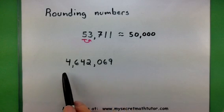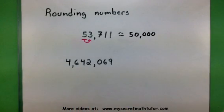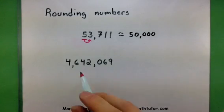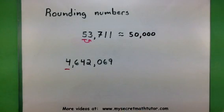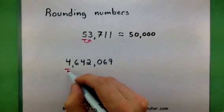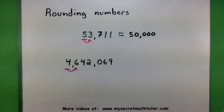Here I have the number 4,642,069. I want to round this one to the millions spot. It would be this 4 guy. Again, I look to the guy just to the right, the 6, to determine what I need to do with this 4.